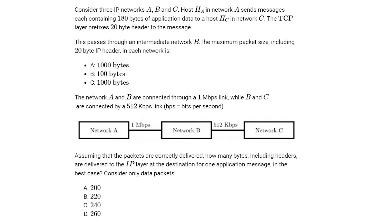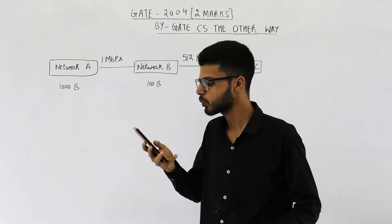They are saying: consider 3 IP networks A, B and C. Host HA in network A sends messages, each containing 180 bytes of application data to host HC in network C. The TCP layer prefixes a 20 byte header to the message. This passes through an intermediate network B. The maximum packet size including 20 bytes of IP header in each network is 1000 bytes for network A, 100 bytes for network B, and 1000 bytes for network C.